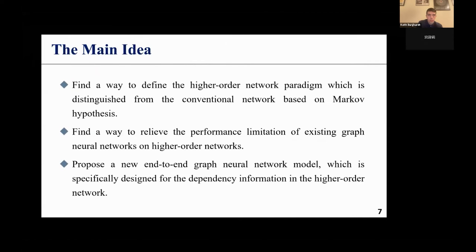We want to solve these problems from the following aspects. First, finding a way to define the higher-order network paradigm, which is distinguished from the conventional network, based on Markov hypothesis. Then, we want to find a way to relieve the performance limits of existing graph neural networks on higher-order networks. Also, we will propose a new end-to-end graph neural networks model, which is specifically designed for the dependency information in the higher-order network.